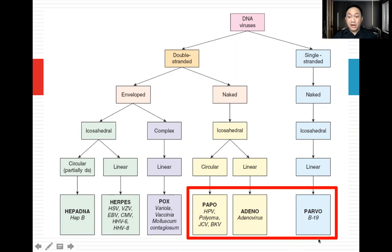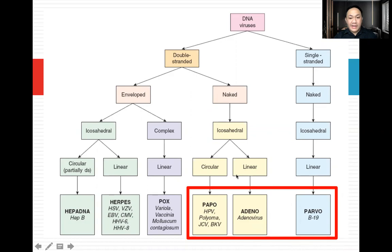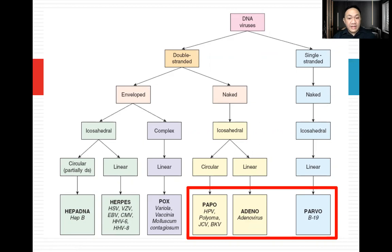Let's first discuss the parvovirus. Your parvovirus is a DNA virus. From this table, it's very helpful to memorize all the general characteristics of these DNA viruses. From the red box, those are what we need to memorize. Parvovirus is a DNA virus, single-stranded, naked, icosahedral, linear virus. It is the only single-stranded DNA virus among them.